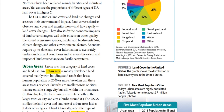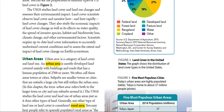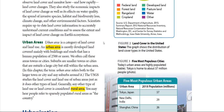Now we will talk about the urban area, which is a category of land cover and land use. An urban area is mostly developed land covered mainly with buildings and growth, with a human population of two thousand five hundred or more — we often call these areas cities. Suburbs are smaller towns or cities outside a large city but still within the urban area, and we can see suburbs around the city.